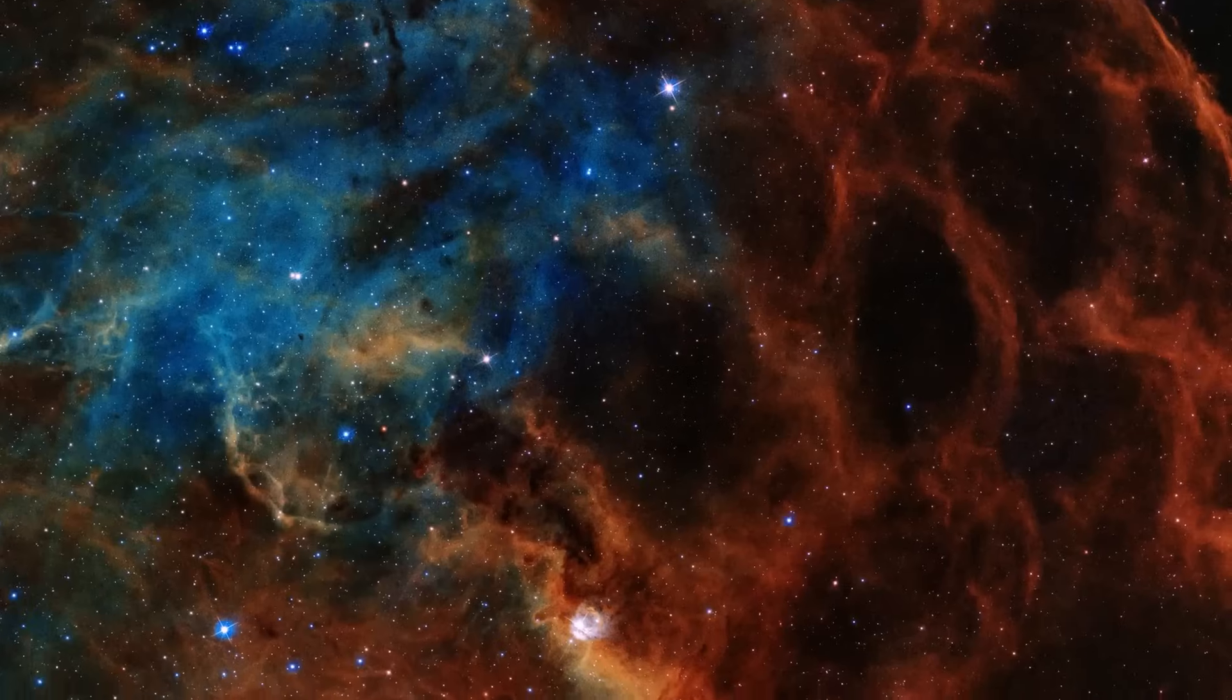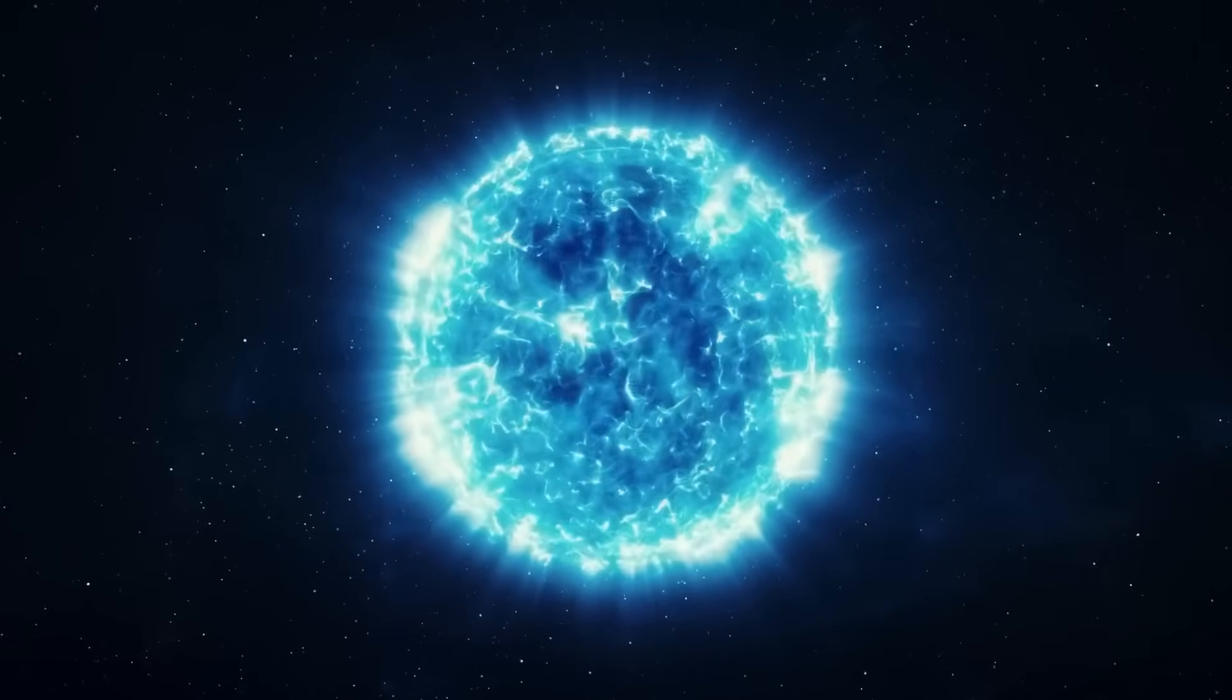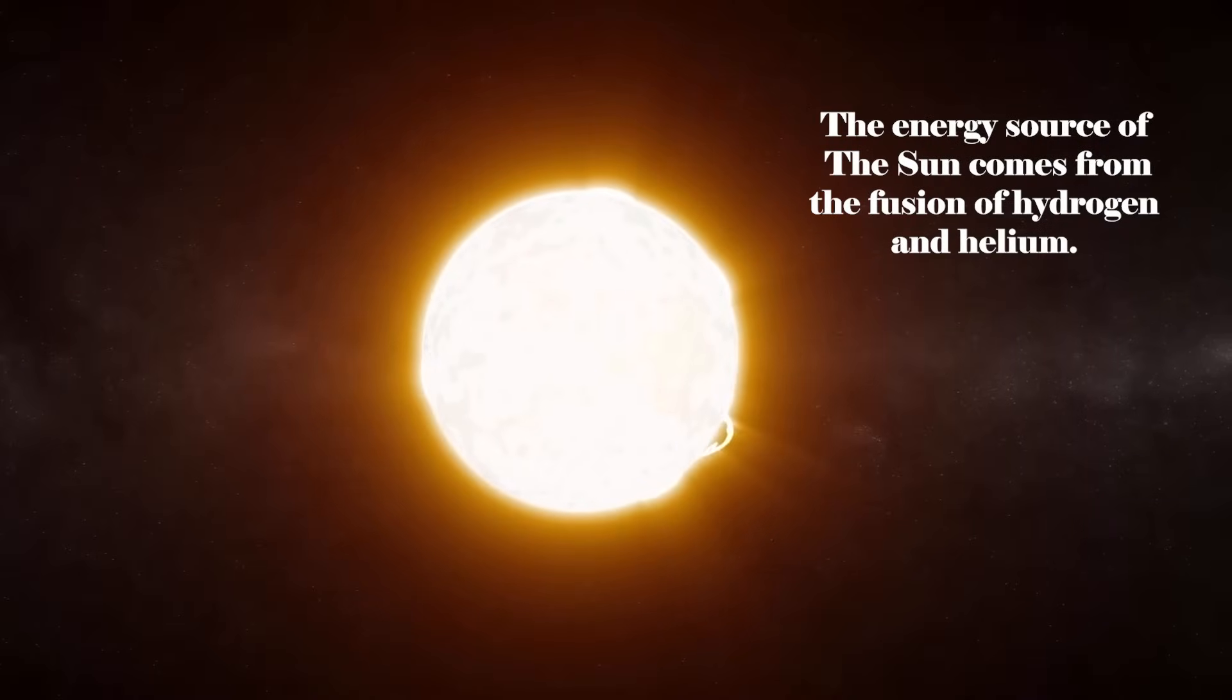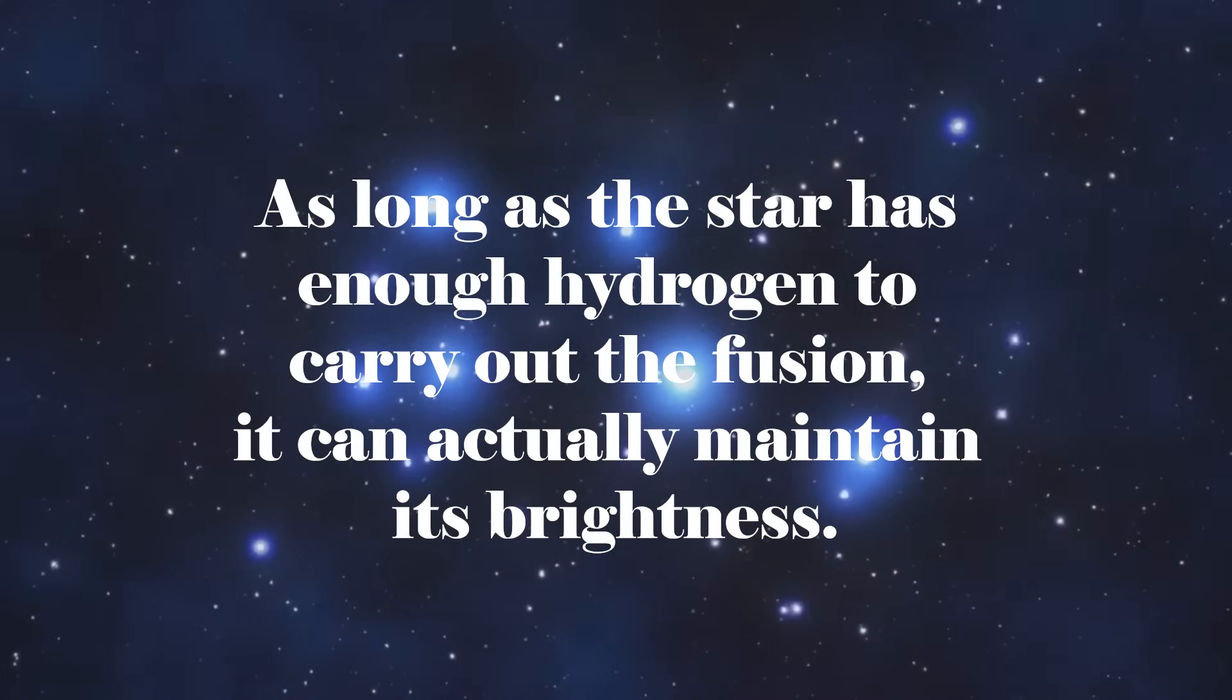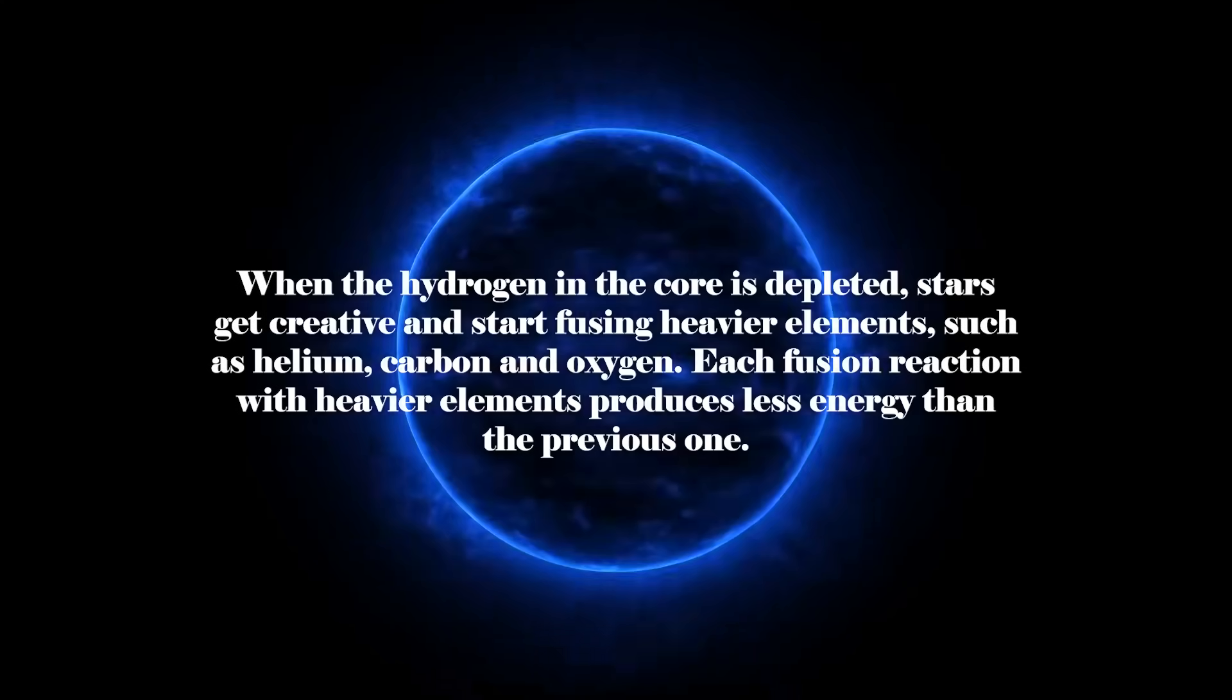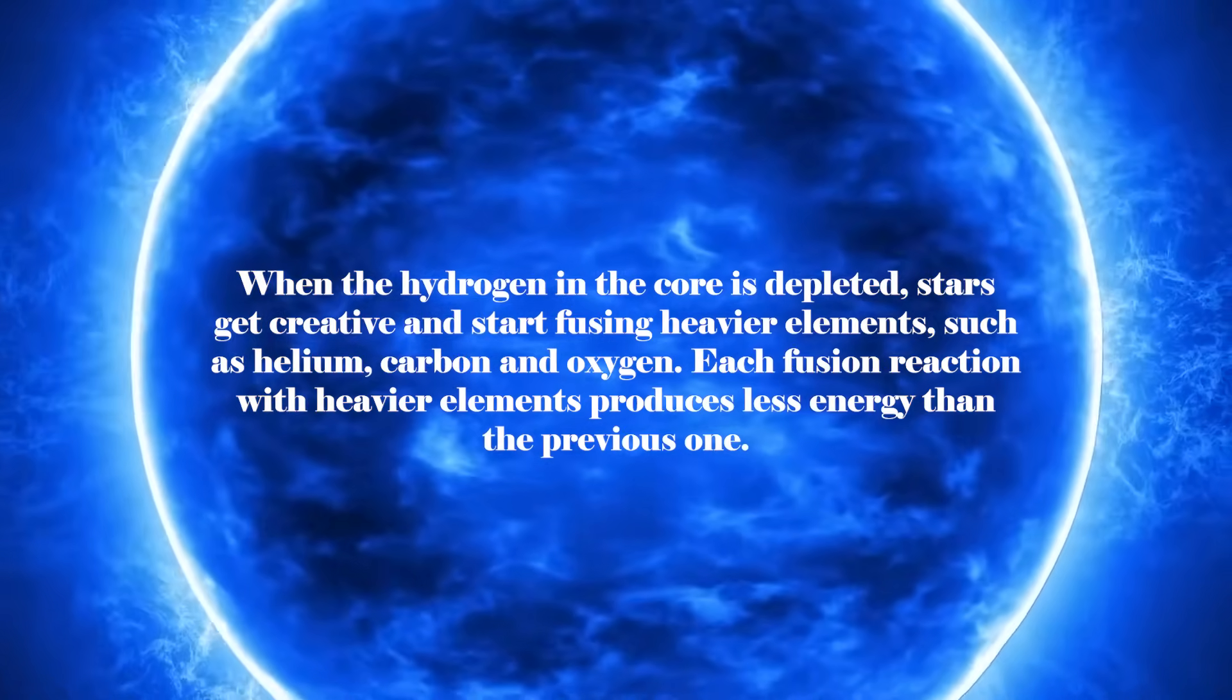To understand how black holes form and what happens inside them, we need to go back to the life cycle of a massive star. These massive stars are true cosmic powerhouses fueled by the incredible nuclear fusion reactions taking place in their cores. The energy source of the sun comes from the fusion of hydrogen into helium. During this process, two hydrogen atoms combine in a collision and form a helium atom. As long as the star has enough hydrogen to carry out the fusion, it can maintain its brightness. However, stars have a voracious appetite and want to keep the fusion party going. When the hydrogen in the core is depleted, stars get creative and start fusing heavier elements such as helium, carbon, and oxygen.